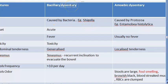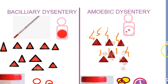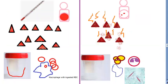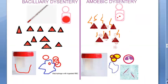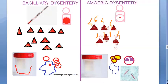First of all, what is dysentery? Dysentery means blood in diarrhea. Diarrhea means watery stools. If there is blood with watery stools, then only it is called dysentery. Now let us look at the differences between bacillary dysentery and amoebic dysentery.